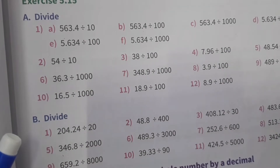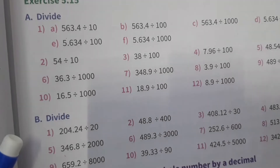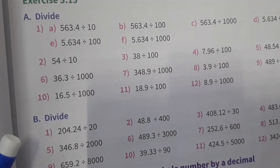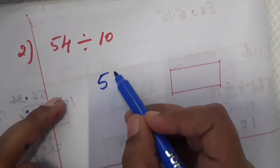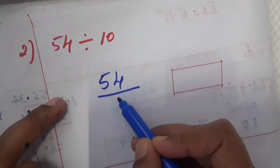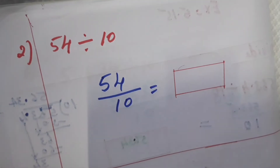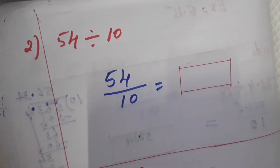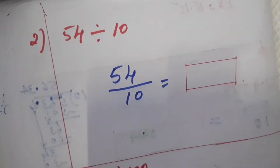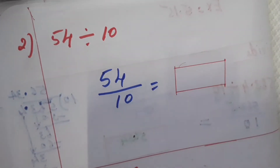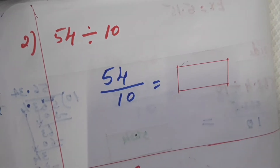54 divided by 10. The number is given. It is not a decimal number, so we can try directly. 54 divided by 10 — we can write the answer directly.